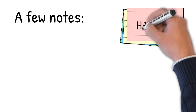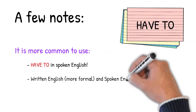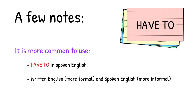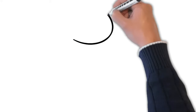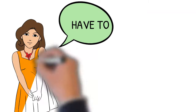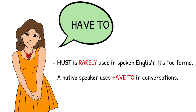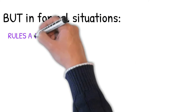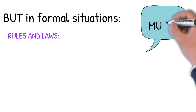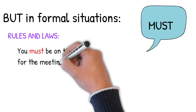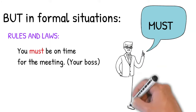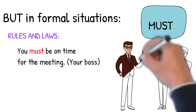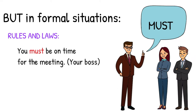A few notes about have to and must. It's more common to use have to in spoken English — very, very common. Written English is more formal, so must is good there. Spoken English is more informal, so have to is more common. You will rarely hear must in spoken English because it's too formal. A native English speaker will always use have to in conversations. But don't be confused — in formal situations, you can use must in spoken English, such as around laws and rules. For example, your boss says 'You must be on time for the meeting' — that's spoken English and it's a rule.